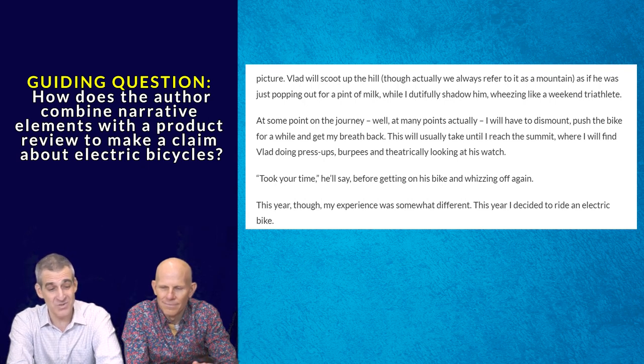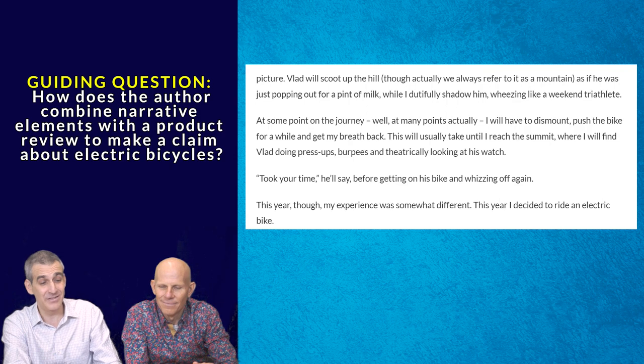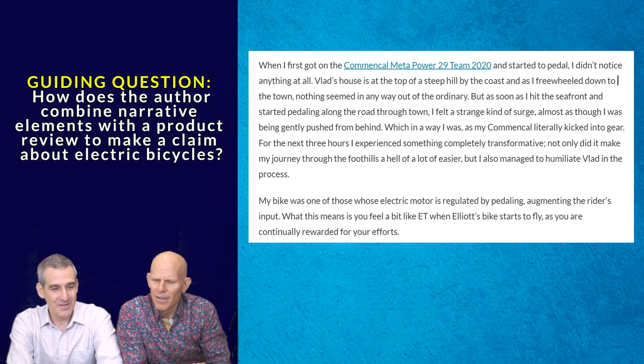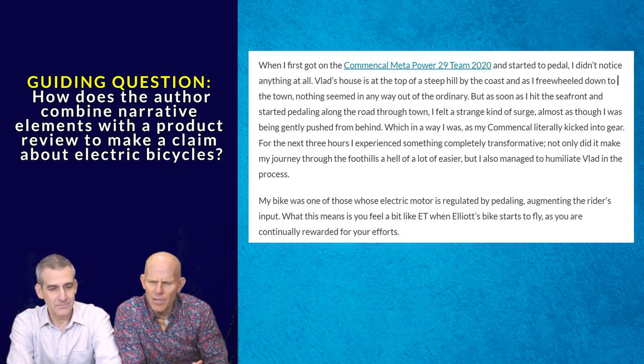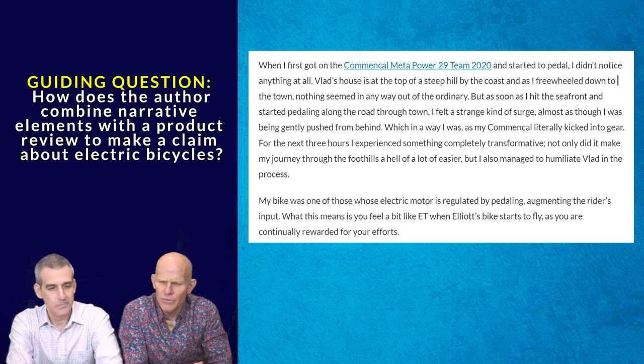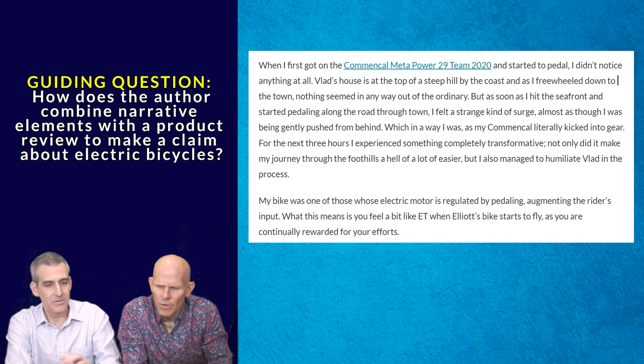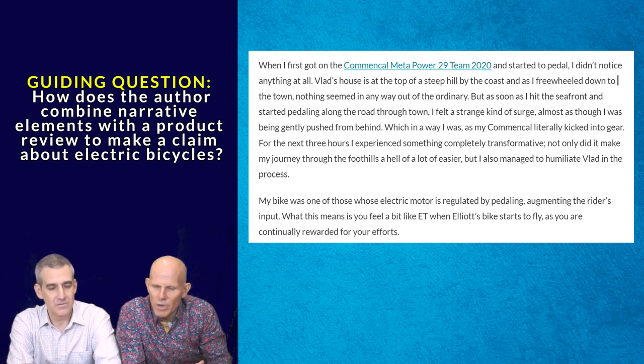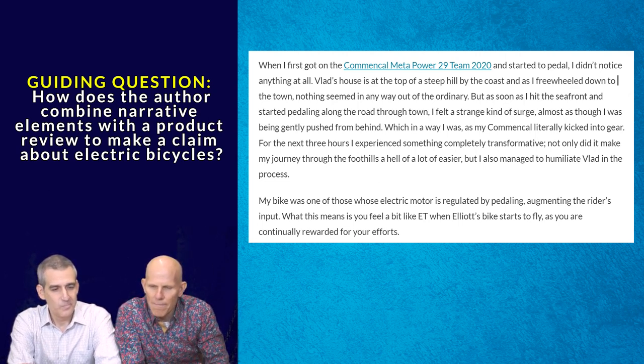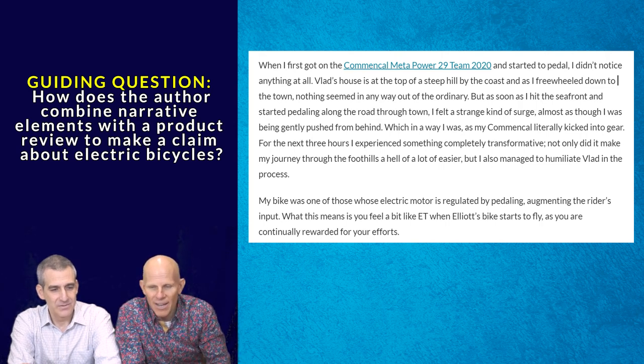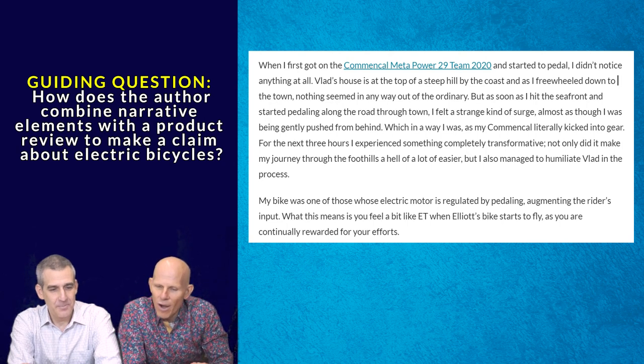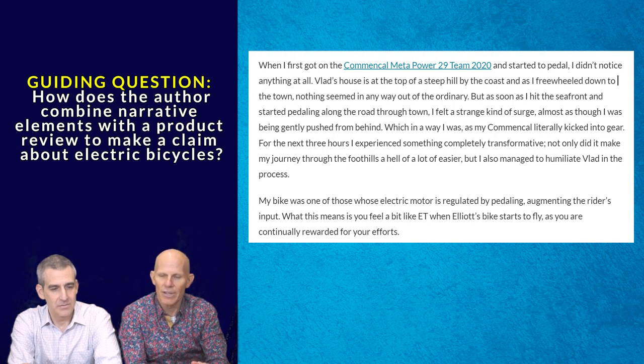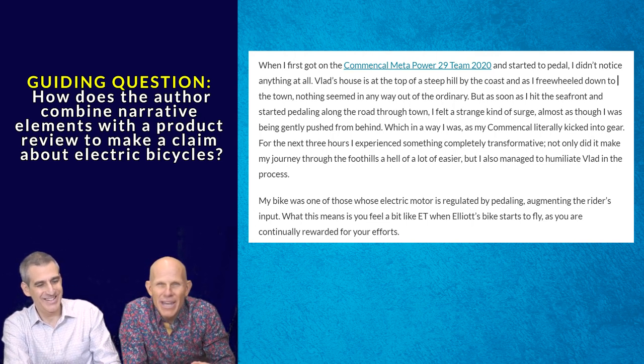This year though, my experience was somewhat different. This year, I decided to ride an electric bike. When I first got on the Commencal Metapower 29 Team 2020 and started to pedal, I didn't notice anything at all. Vlad's house was at the top of a steep hill by the coast, and as I freewheeled down to the town, nothing seemed in any way out of the ordinary. But, as soon as I hit the seafront and started pedaling along the road through town, I felt a strange kind of surge, almost as though I was being gently pushed from behind. Which, in a way, I was, as my Commencal literally kicked into gear. For the next three hours, I experienced something completely transformative. Not only did it make my journey through the foothills a hell of a lot easier, but I also managed to humiliate Vlad in the process.